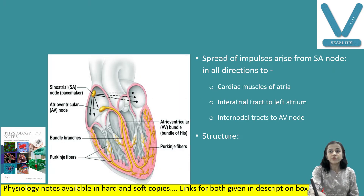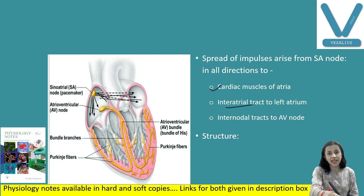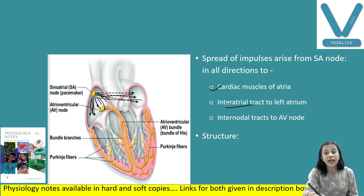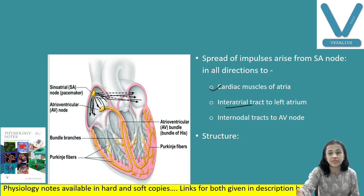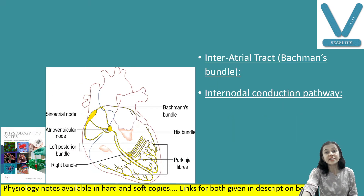Impulses arise from the SA node and spread in all directions to the cardiac muscle of the atria — right atrium as well as left atrium — through the interatrial track. They also travel through the internodal track between SA node and AV node. Structurally, SA node cells have ill-defined boundaries, and the cells are thin, elongated, fusiform-shaped pacemaker cells. The heart contracts at the rate determined by the SA node.